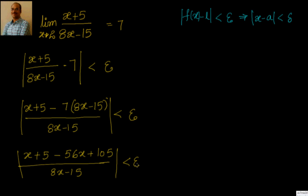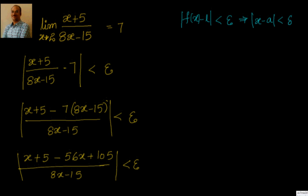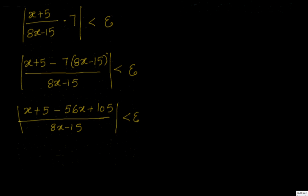So what are we trying to do? We are trying to convert this by factorization. Now what I have here is the numerator simplifies — combining terms like 110 - 55x and so on — divided by |8x - 15|.